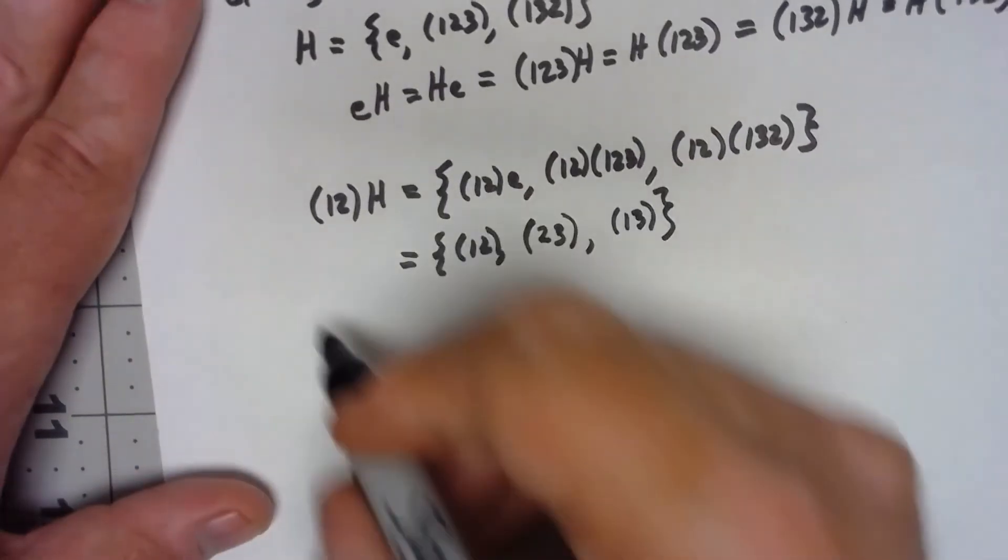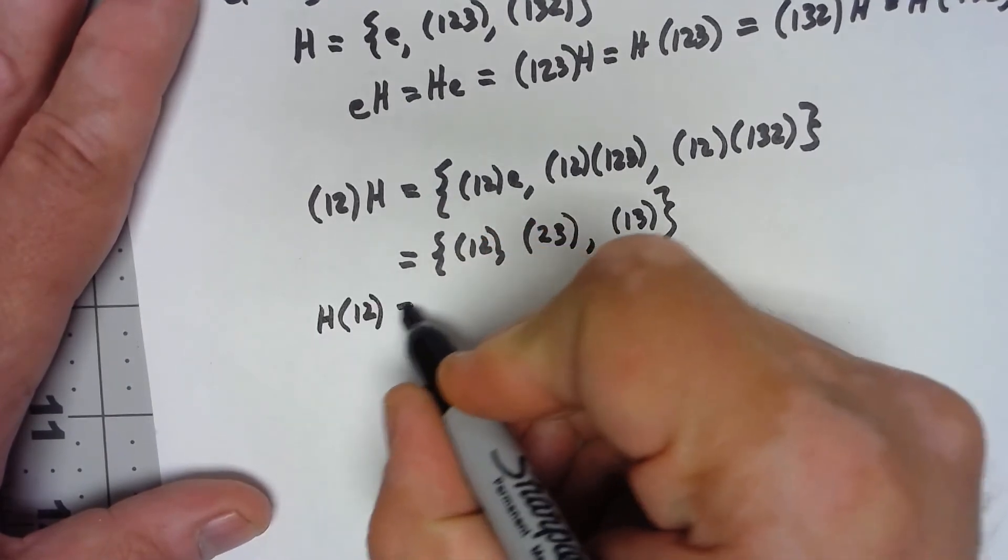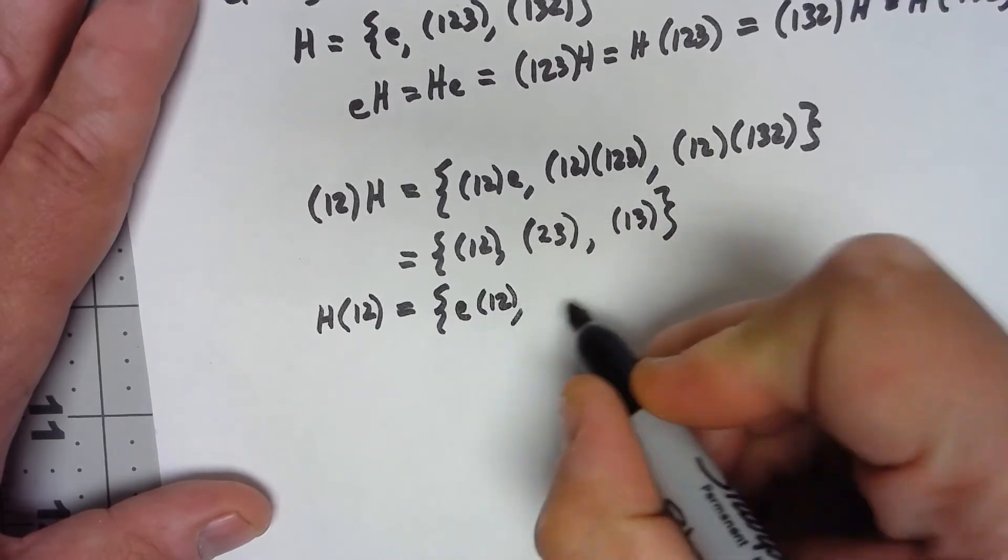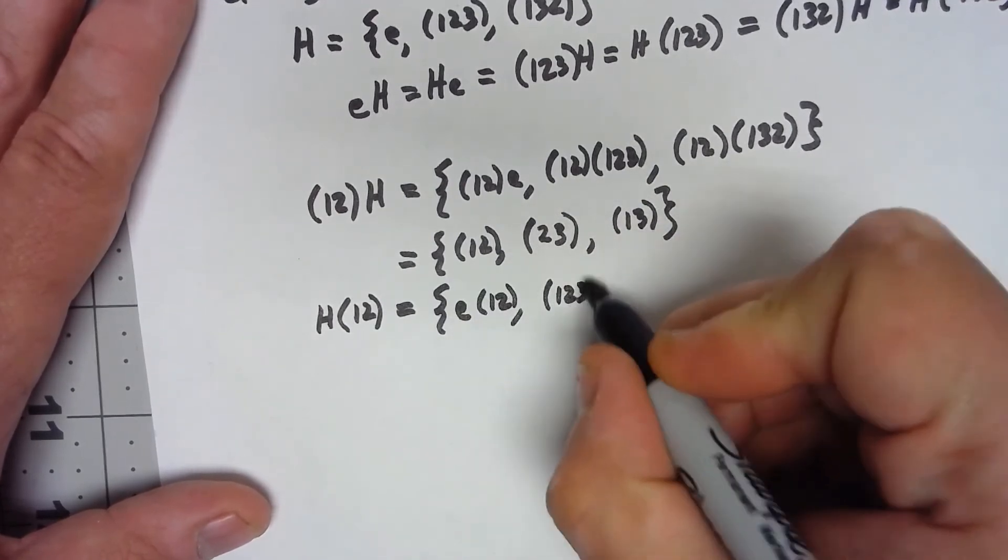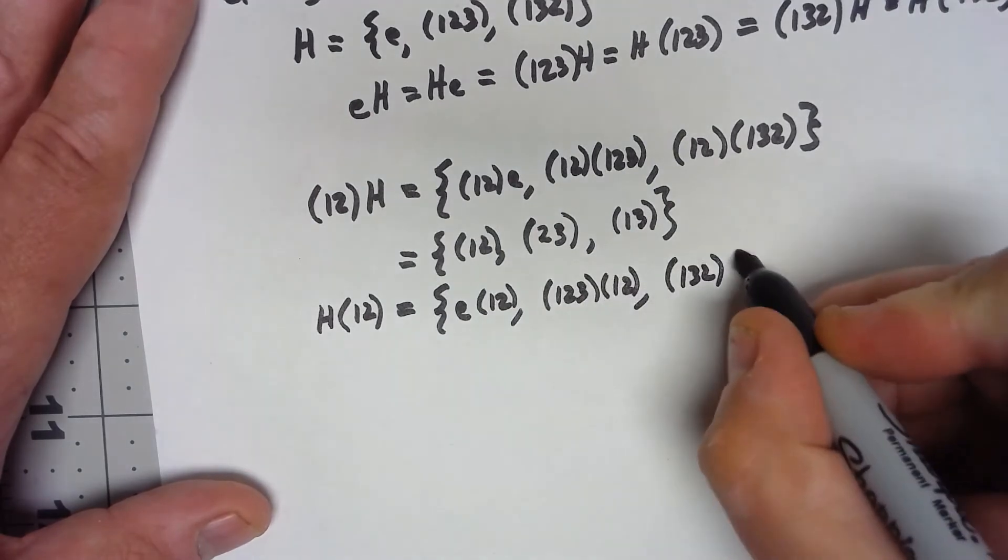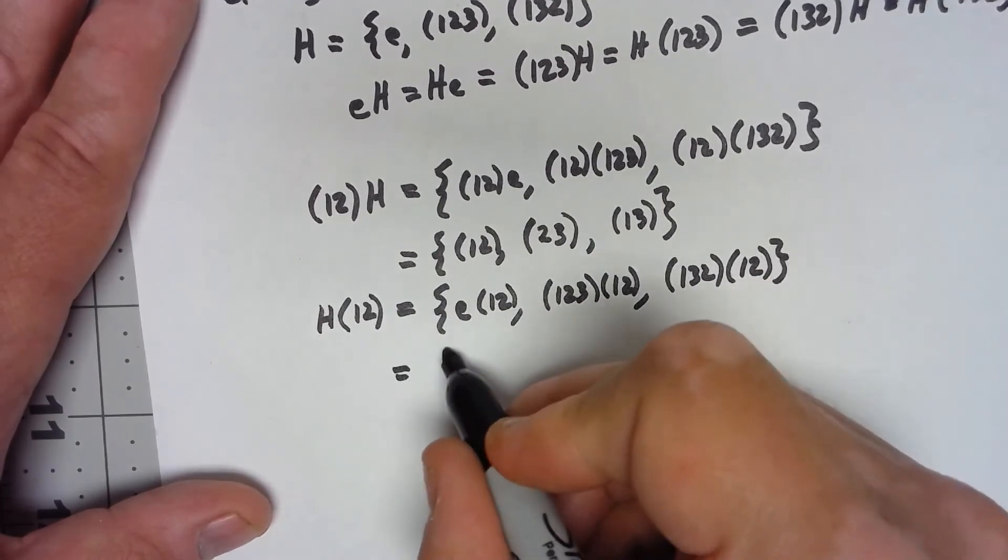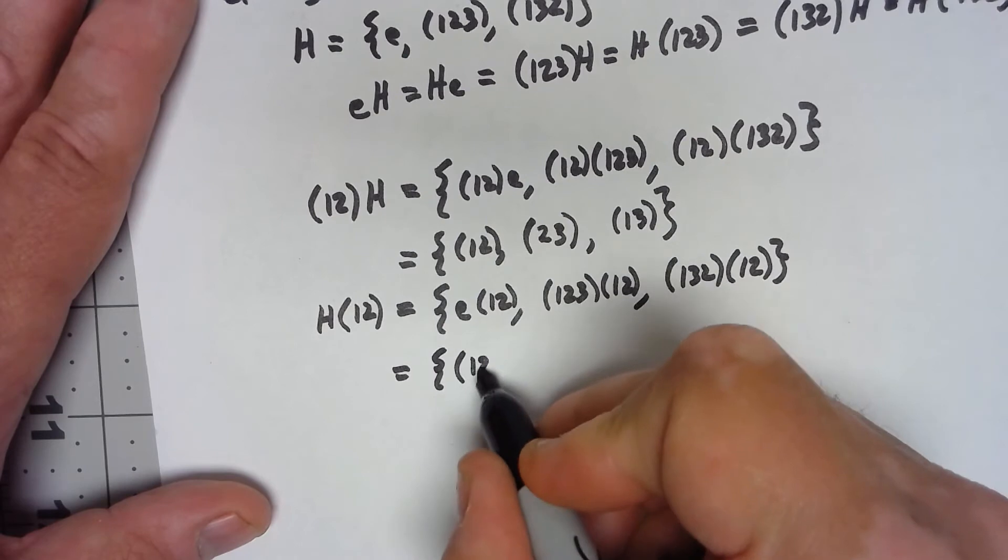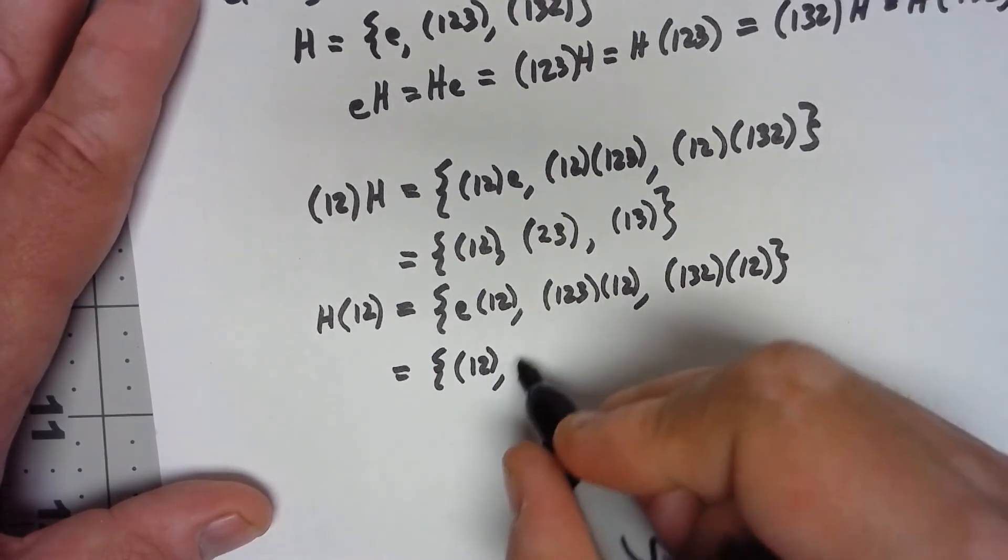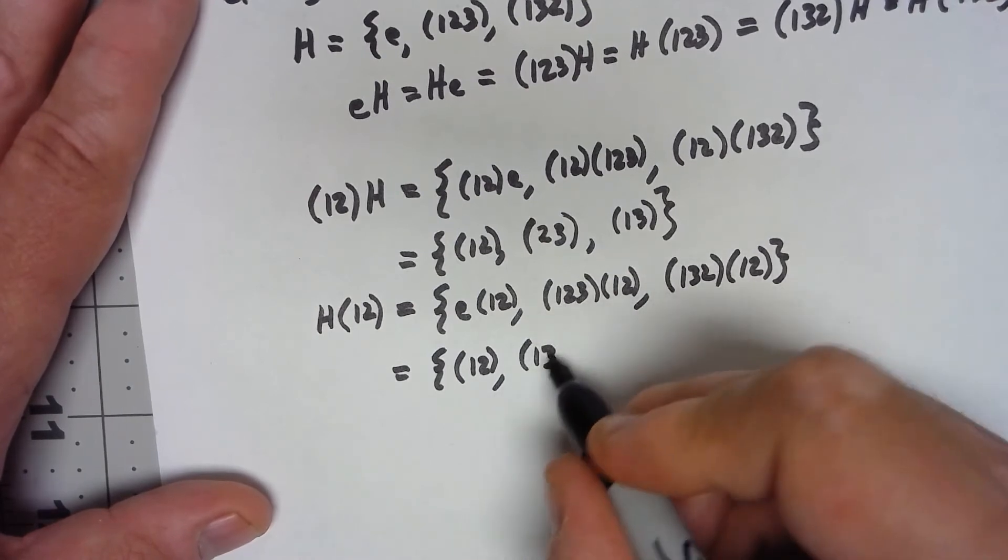On the other hand, if I do H(1,2), I get e times (1,2), I get (1,2,3) times (1,2), and I get (1,3,2) times (1,2). e times (1,2) is still just (1,2). Here, 1 goes to 2 goes to 3, 3 goes to 1, so that's just that. 2 goes to 1 goes to 2.